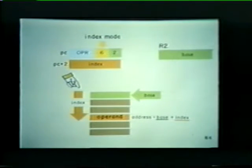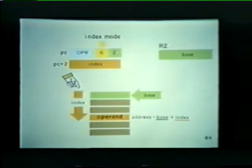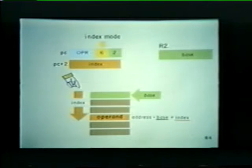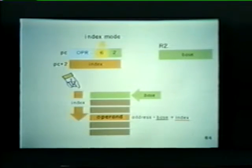Now, where's the index word located? Well, the index, or displacement of an entry relative to the base, can be stored in the first word location that follows the instruction. Here, we have an instruction that calls for the index mode. When this instruction is retrieved and decoded, the PC is incremented by two. The new value, PC plus two, is the address of a memory location containing the index word. Thus, we've located our operand by summing a base address stored in R2 with an index word that follows the current instruction.